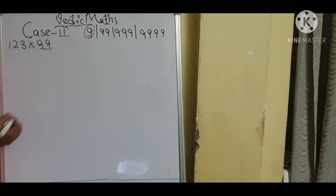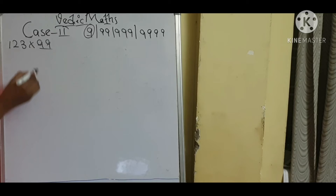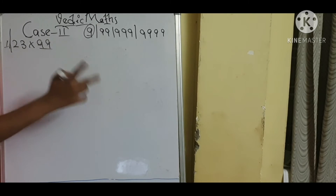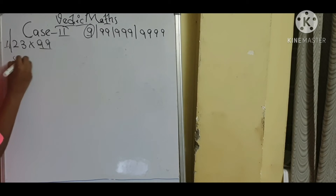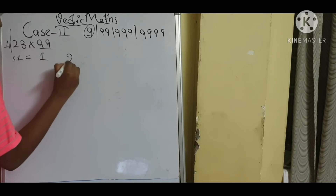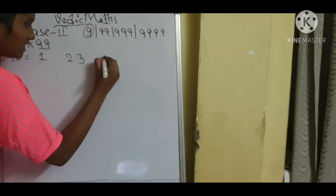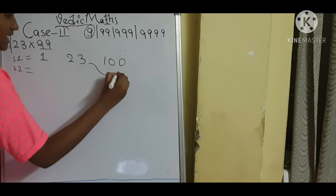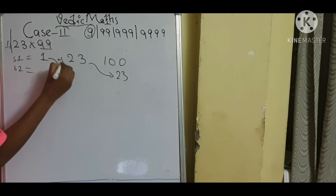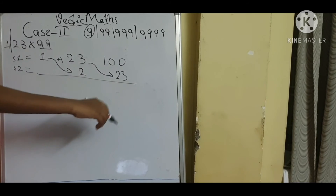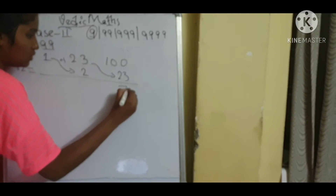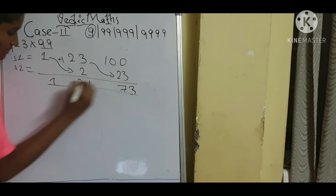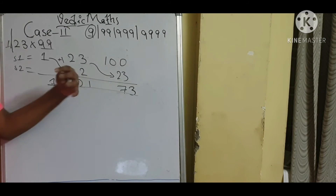Now I will do it with 99. I am taking the example of 123 × 99. Since 99 is a two-digit number, we keep a slash after two digits. Step 1 is equal to 1 and 23, and the base of 99 is 100. Step 2: we directly take 23. Then 1 plus 1 is equal to 2. Calculation: 100 minus 23 is equal to 77, next 23 minus 2 is equal to 21, and directly 1. So the answer is 12,177.